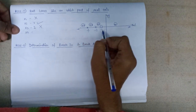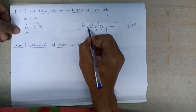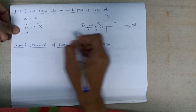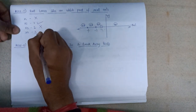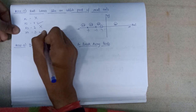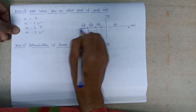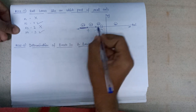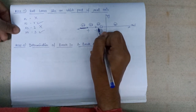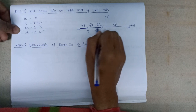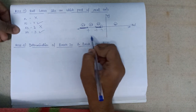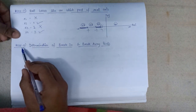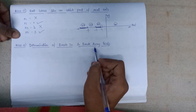Region x4, from -3 to -infinity, has two poles and one zero to its right, totaling three — since three is odd, it is a valid region. Therefore the root locus lies in region x4 (from -infinity to -3) and in region x2 (from -2 to -1). These are the two valid areas where the root locus will lie.